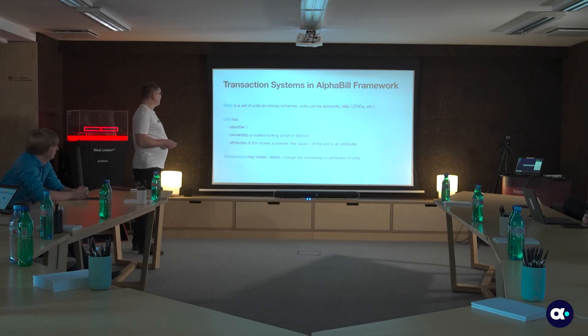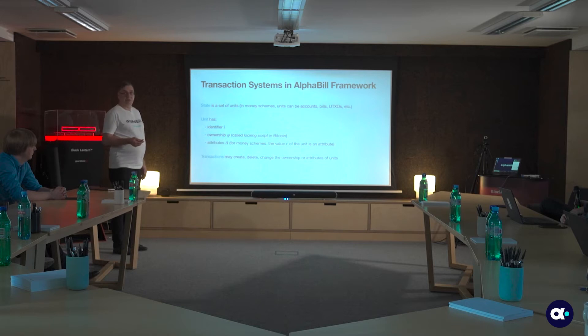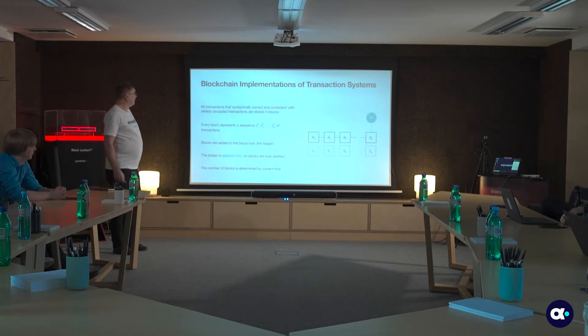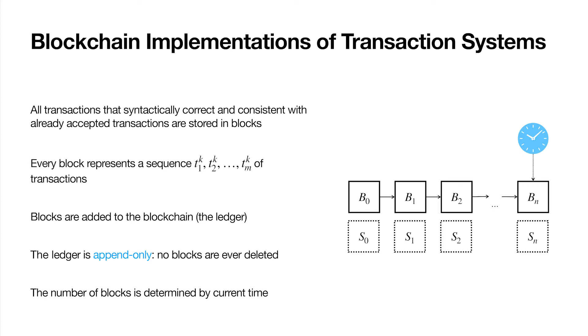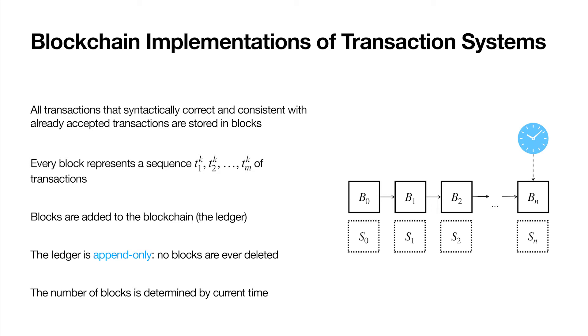Transactions in any Alphabill framework transaction system may create, delete, or change the ownership or attributes of the units — for example, the value if you have a money scheme. So what is a blockchain implementation of a transaction system, and why do we want to implement it as a blockchain? First, we want to make the transactions auditable, visible, and verifiable. All transactions should be syntactically correct and consistent with the already accepted transactions and the initial state.